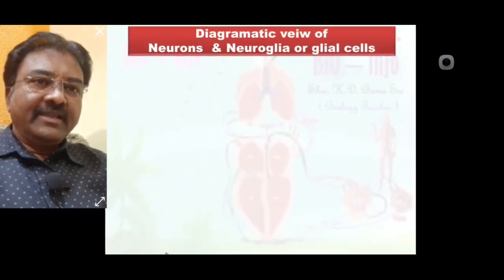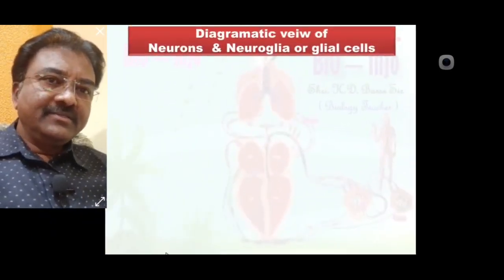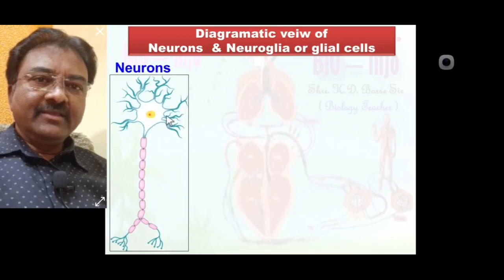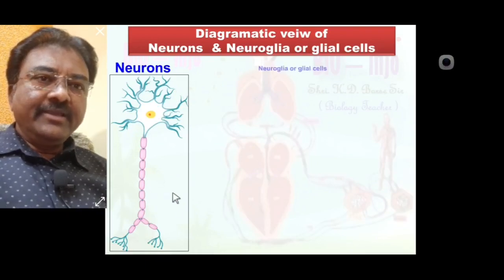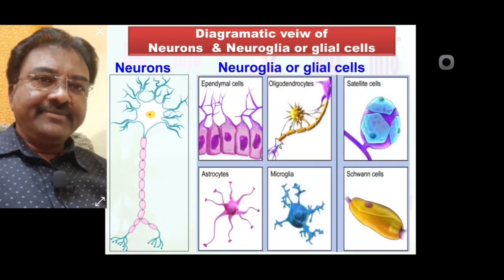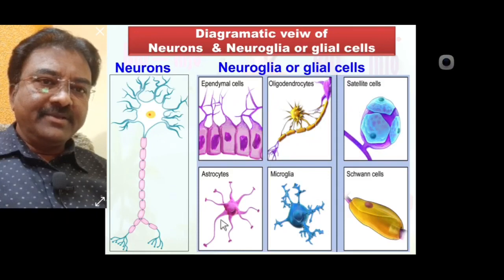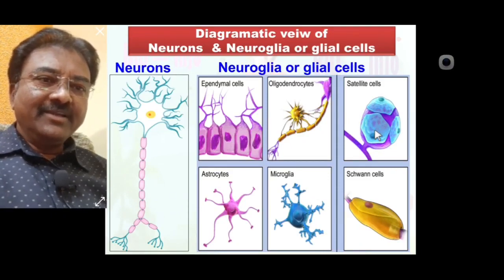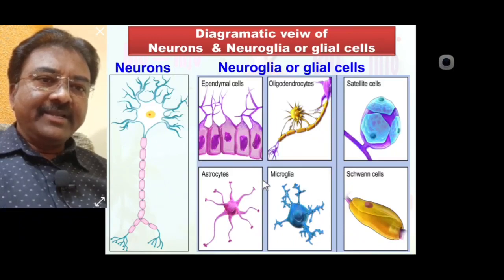In the diagrammatic view of neural tissue, there are two types of neural cells: neurons and neuroglia or glial cells. A single neuron consists of a cytone, nucleus, dendrites, and an axon part. Neuroglia or glial cells are of different shapes and sizes. In the diagrammatic representation, the large cell is the neuron, and the surrounding black spots are neuroglial cells.